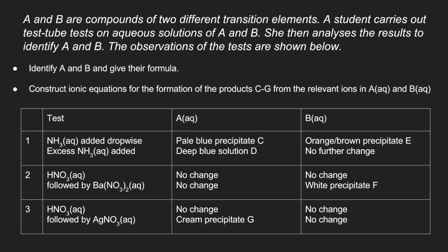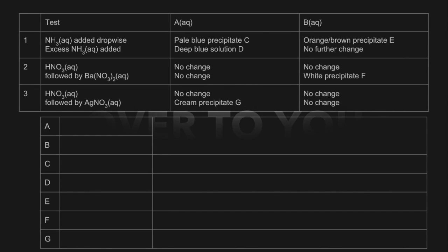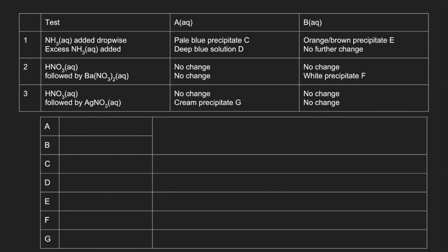So if you want to pause now, have a go and then play on for the answers. So the way I'll do the answers, we'll look at C through to G first of all. We'll identify those and give the equations and then we'll summarise all of the information and say what A and B actually are.